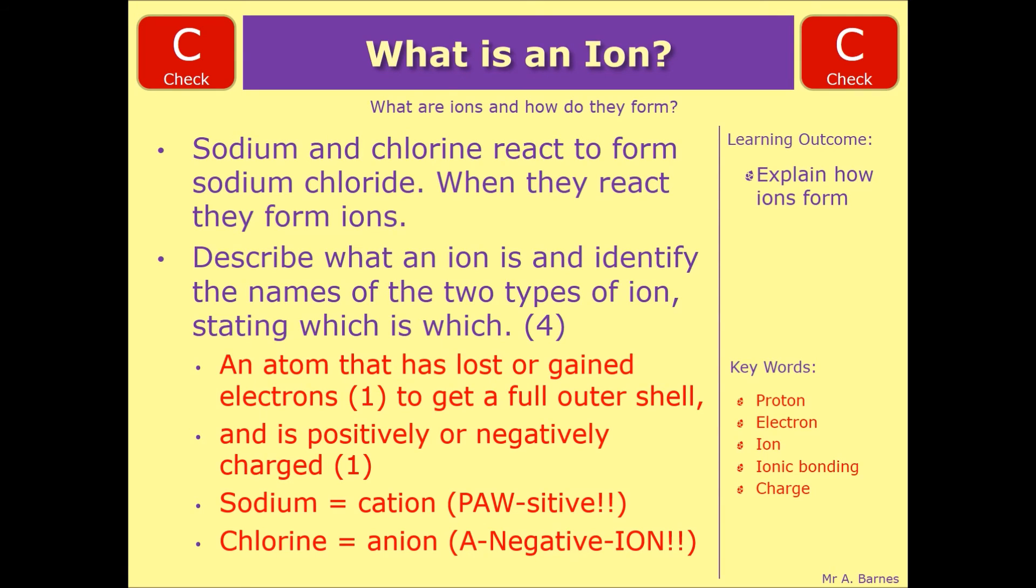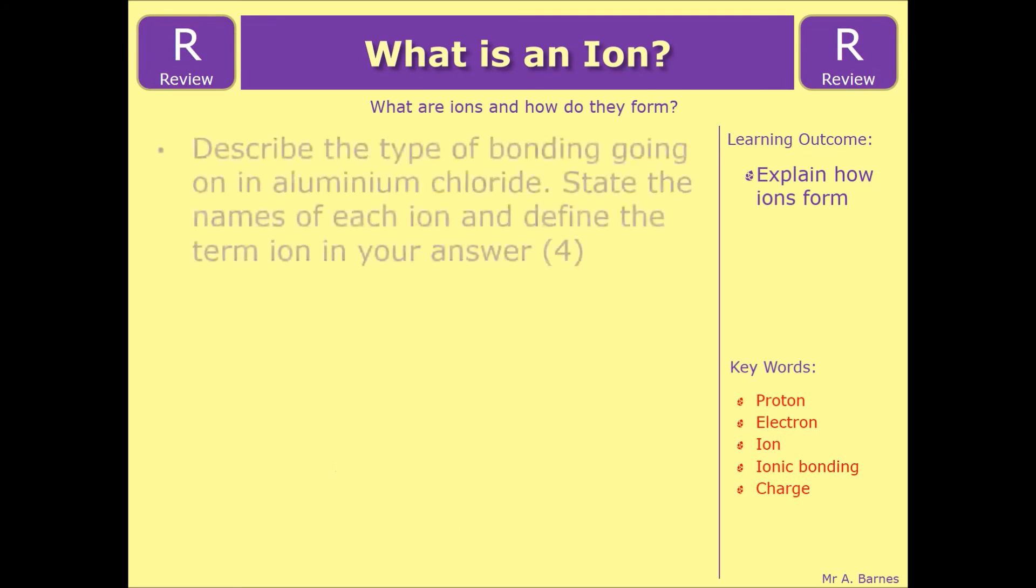Hopefully that's made you a bit more confident on this. And if so, have a look at the review question, which is, describe the type of bonding going on in aluminum chloride. There's a big clue seeing as this topic is ionic bonding. And then state the names of each ion and define the term ion in your answer. So very similar to what we've just been through. That ends it with you.